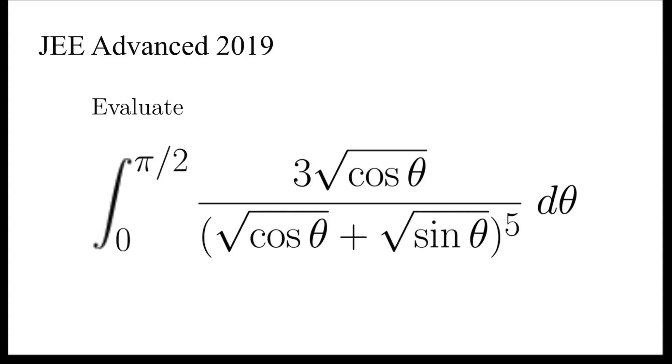This is a problem from JEE Advanced Examination 2019. We need to evaluate the integral of 3√cos θ divided by (√cos θ + √sin θ)^5, integrated from θ equals 0 to π/2.